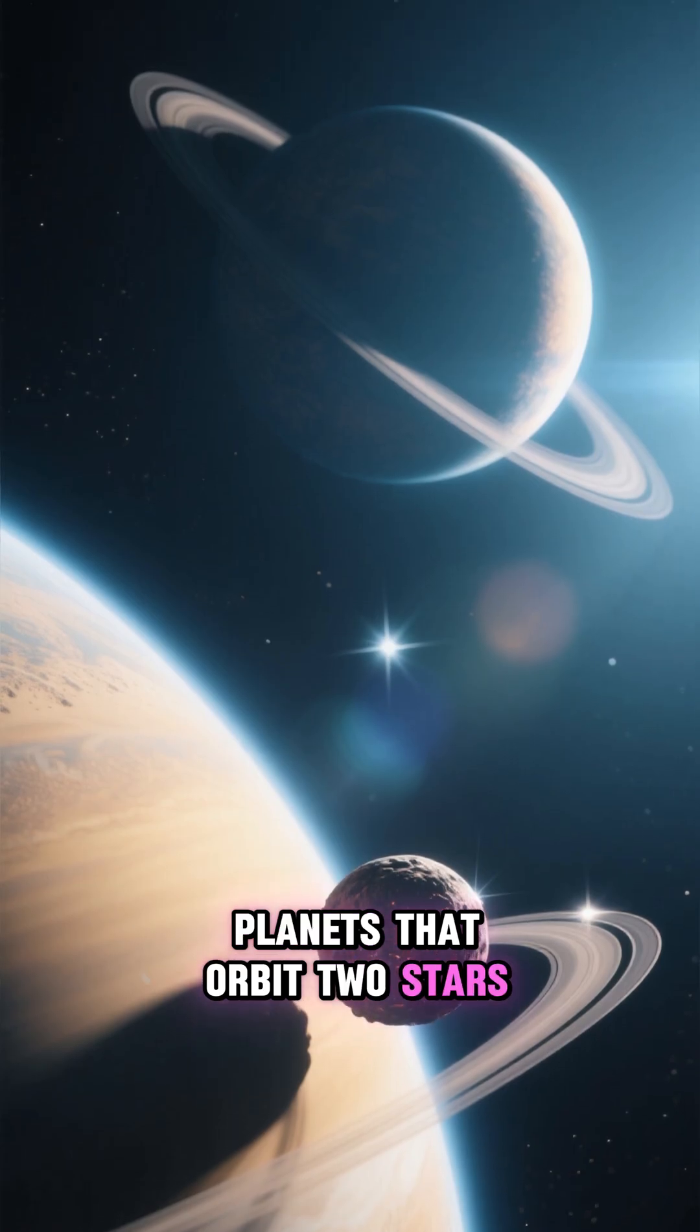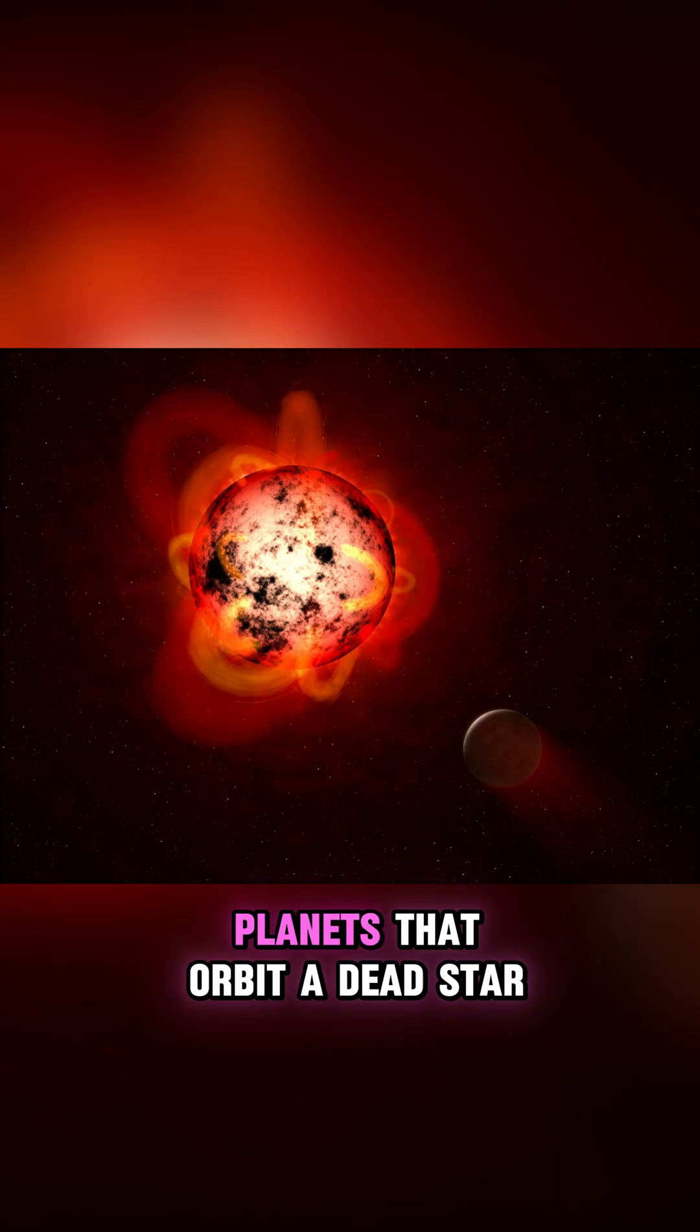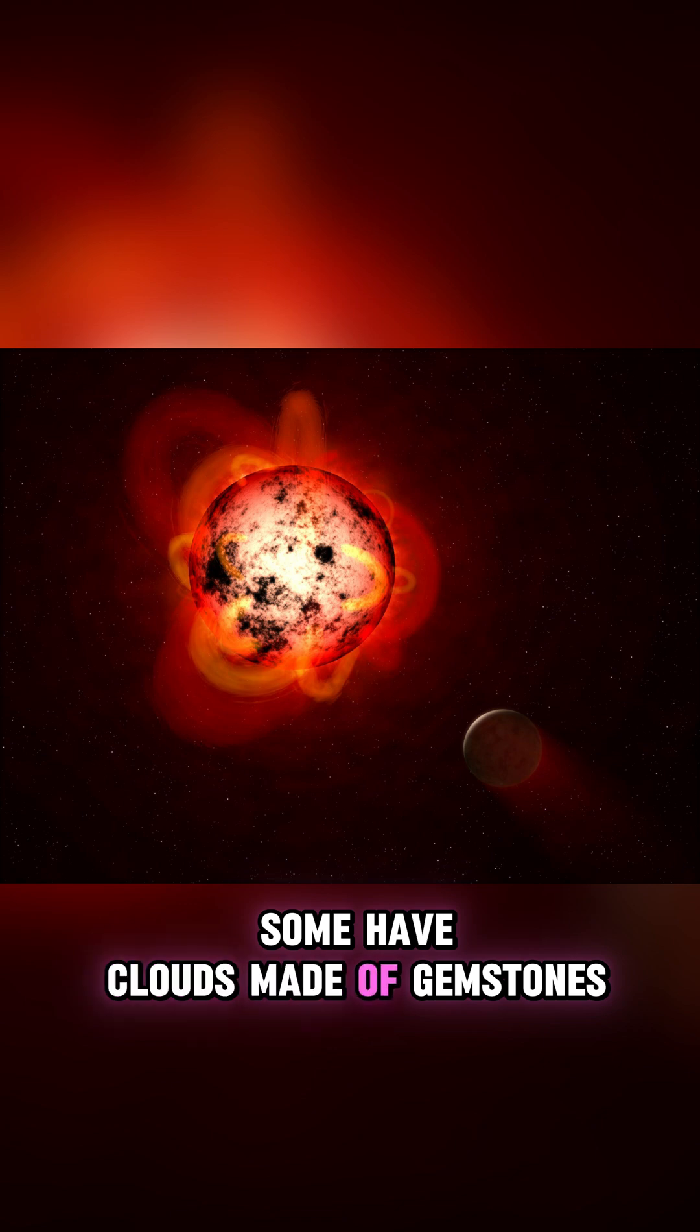Planets that orbit two stars. Planets that don't orbit any star at all. Planets that orbit a dead star. Planets that are covered in lava. Some have clouds made of gemstones.